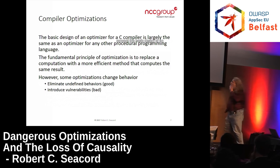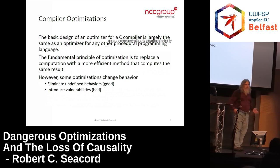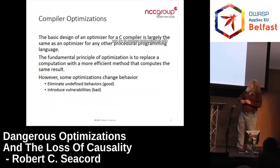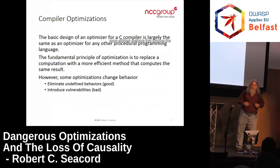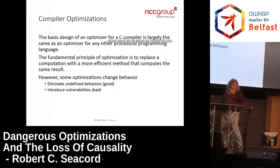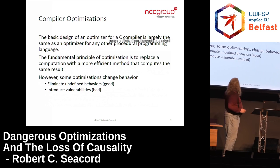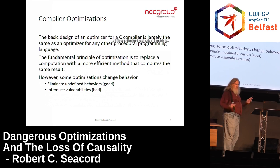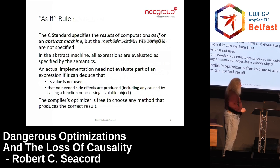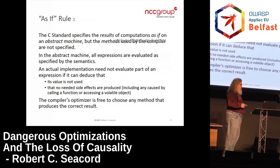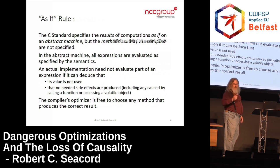The basic design of an optimizing compiler for C is largely the same as for any other language — you try to replace computations with more efficient methods that produce the same result. Some optimizations eliminate undefined behaviors — those are the good optimizations. Others introduce vulnerabilities — those are the bad optimizations. I worked with David Keaton, who's the chair of the C Standards Committee now, and he didn't like that I called this talk 'dangerous optimizations.' He thought I should have just called it 'optimizations.' That's a little window into the mindset of people in the C Committee.